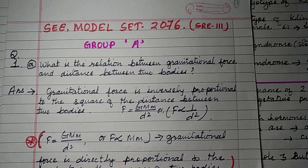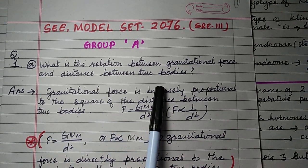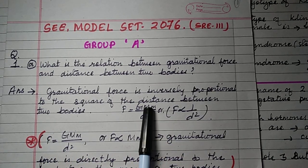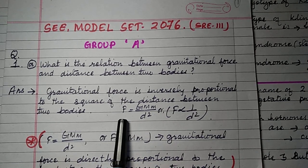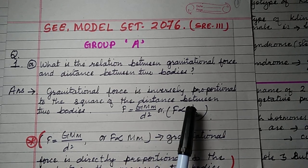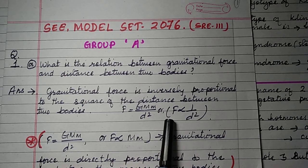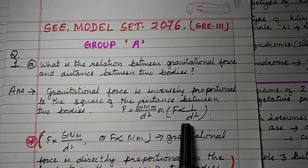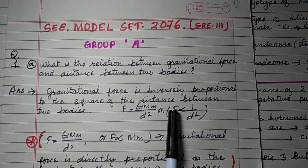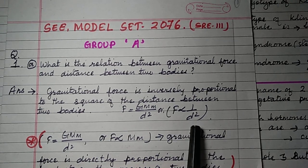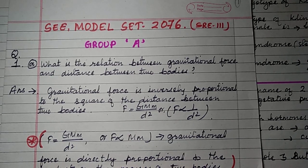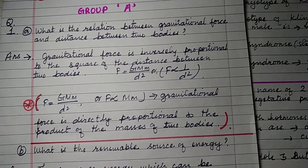Question number 1A: What is the relation between gravitational force and distance between two bodies? Gravitational force is inversely proportional to the square of the distance between two bodies, from the formula F = Gm₁m₂/D² or F ∝ 1/D². So force is inversely proportional to the square of the distance. If distance is smaller, force is bigger; if distance is bigger, force is smaller.